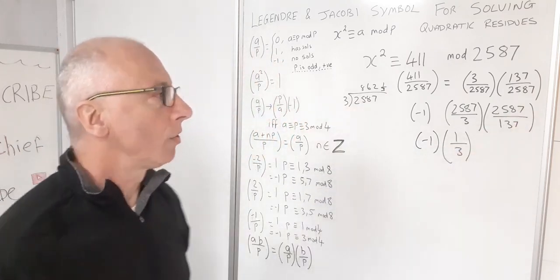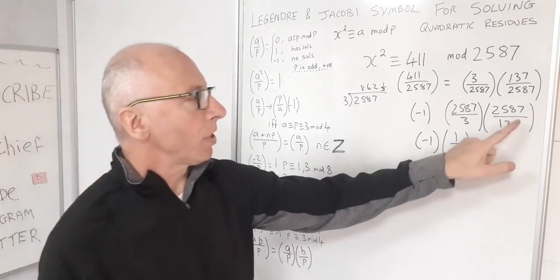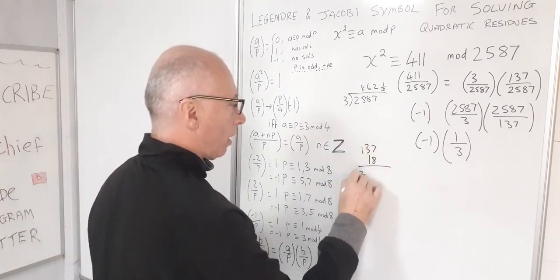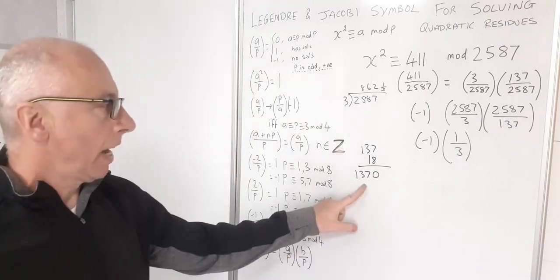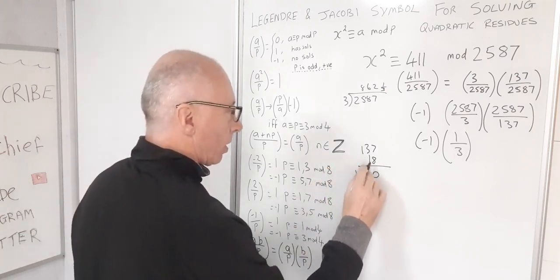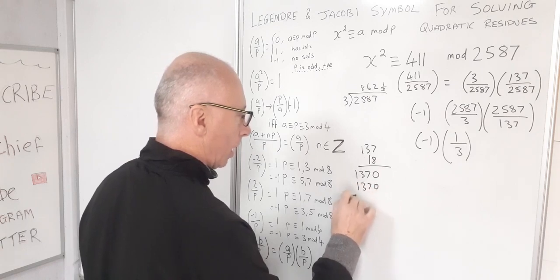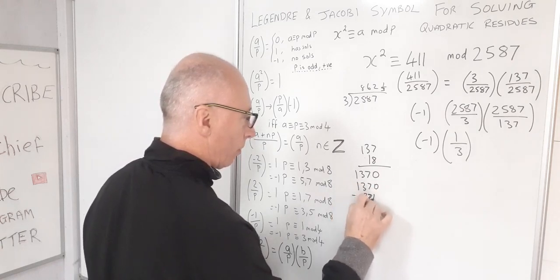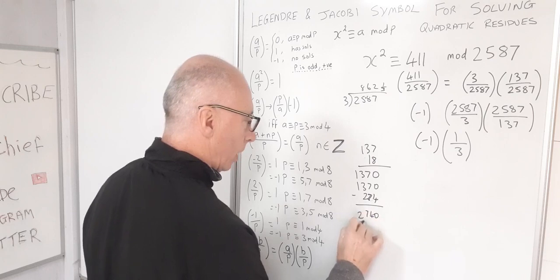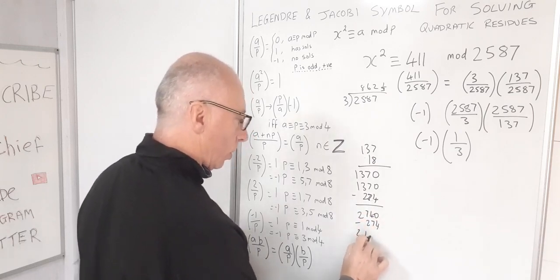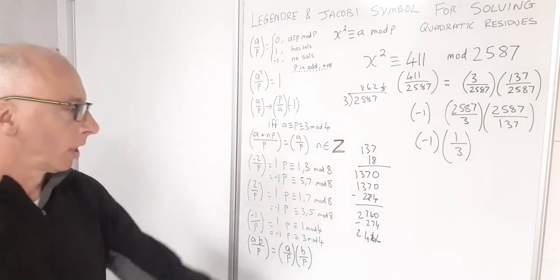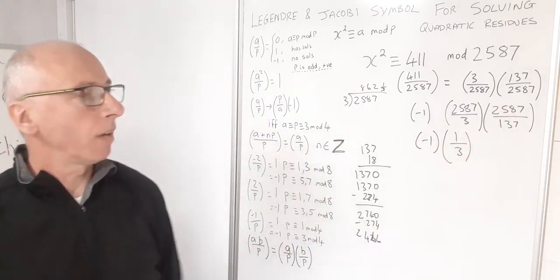What about this one? 2587 over 137. So a multiple of 137 deducted by that. So 137, if I multiply that by 18, I've got 1370. And then 8 times 137s, that's going to give me, let's have a look, 1370 minus 274. So another 1370 minus 274. So that's going to give me 2426. 2466.